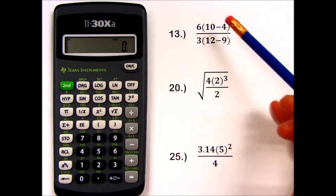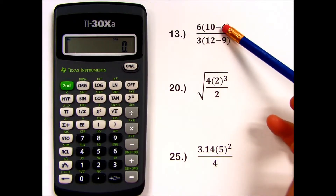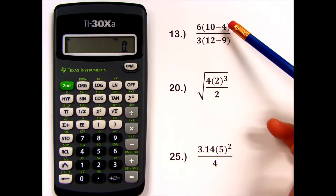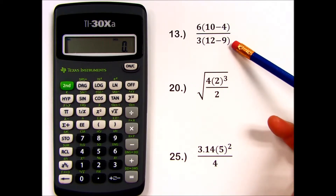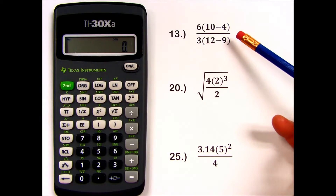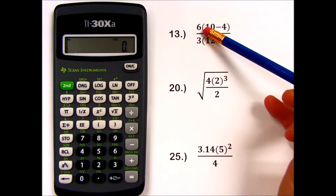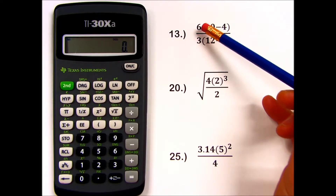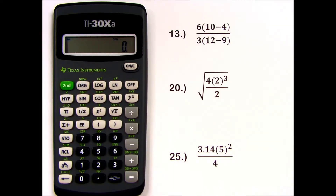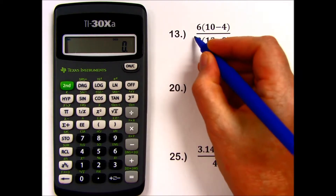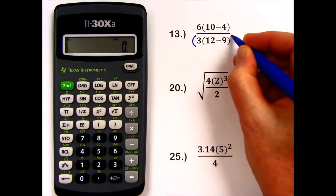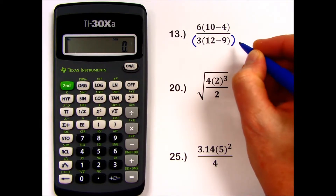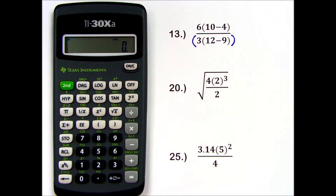In number 13, I notice I have a fraction with two operations — multiplication and subtraction — in each of the numerator and the denominator. Before we begin, a couple of reminders. When I see a number next to a parenthesis, that's multiplication assumed, and I'm going to press the multiplication key even though it is not written on paper. Also, to keep the denominator properly grouped, I'm going to add a parenthesis around the entire denominator so that we can key this in all in one sequence of keystrokes.